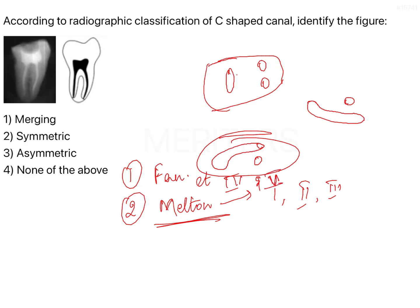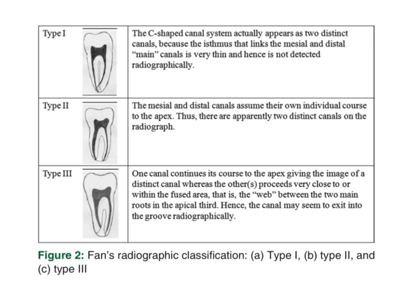Fan also gave the radiographic classification of C-shaped canals, so that when you see a radiograph you can easily identify how a C-shaped canal looks. Based on that, Fan et al. gave three types of radiographic classification of C-shaped canals.